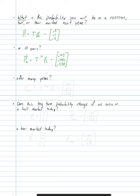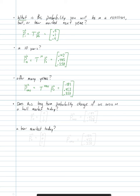The next bullet asks for the long-term probability after many years. Using Mathematica, if we decide 1,000 years is sufficient, p of 1,000 equals the transition matrix multiplied together 1,000 times, then multiplied by the initial probability vector. The answer is [0.189, 0.453, 0.358] — that is, roughly a 18.9% chance of recession, 45.3% chance of bull market, and 35.8% chance of bear market after many years.